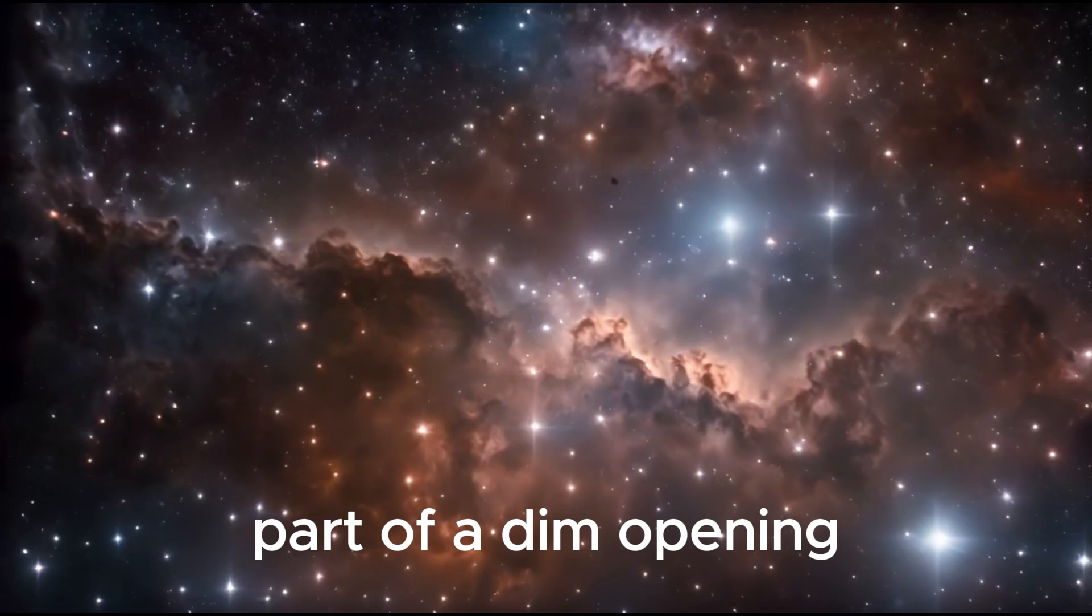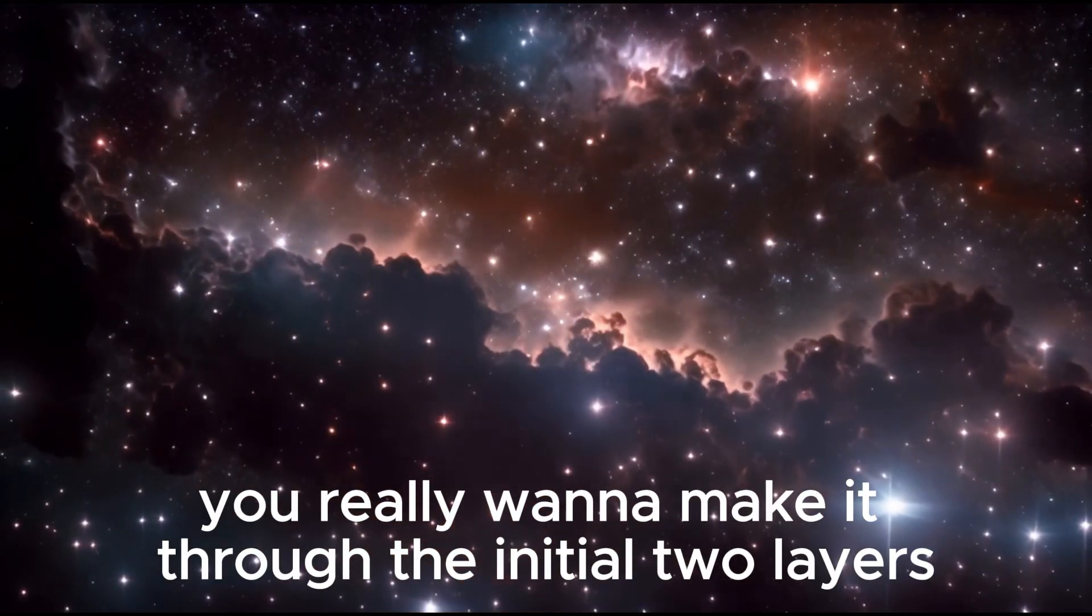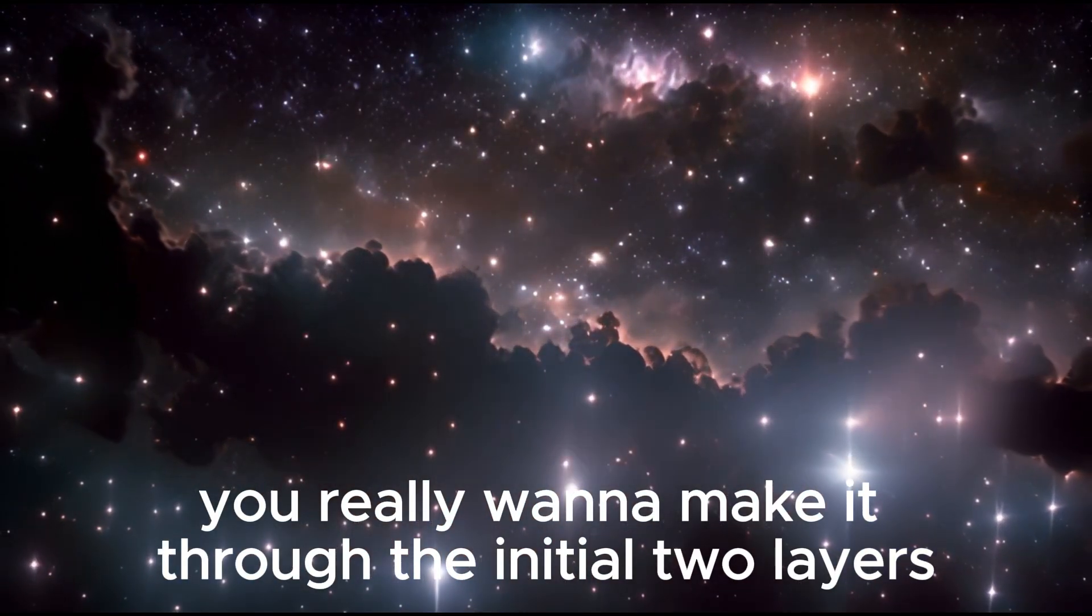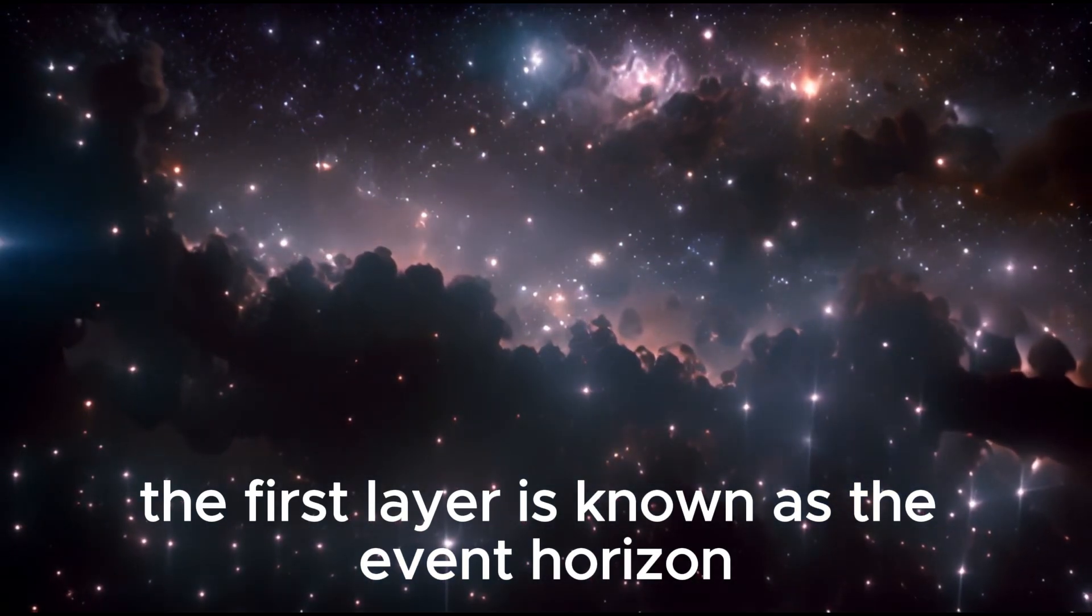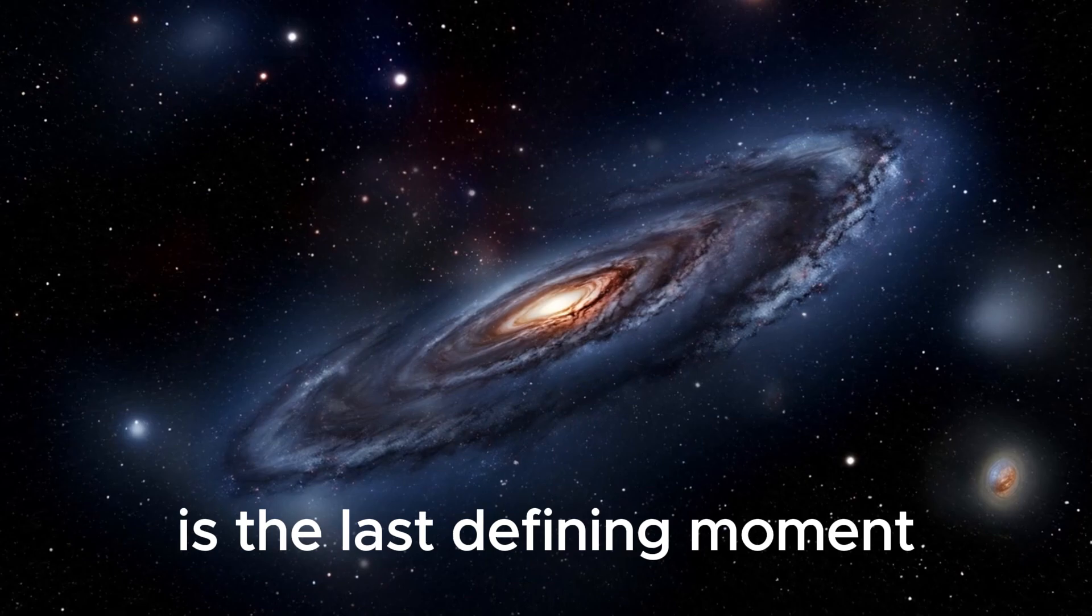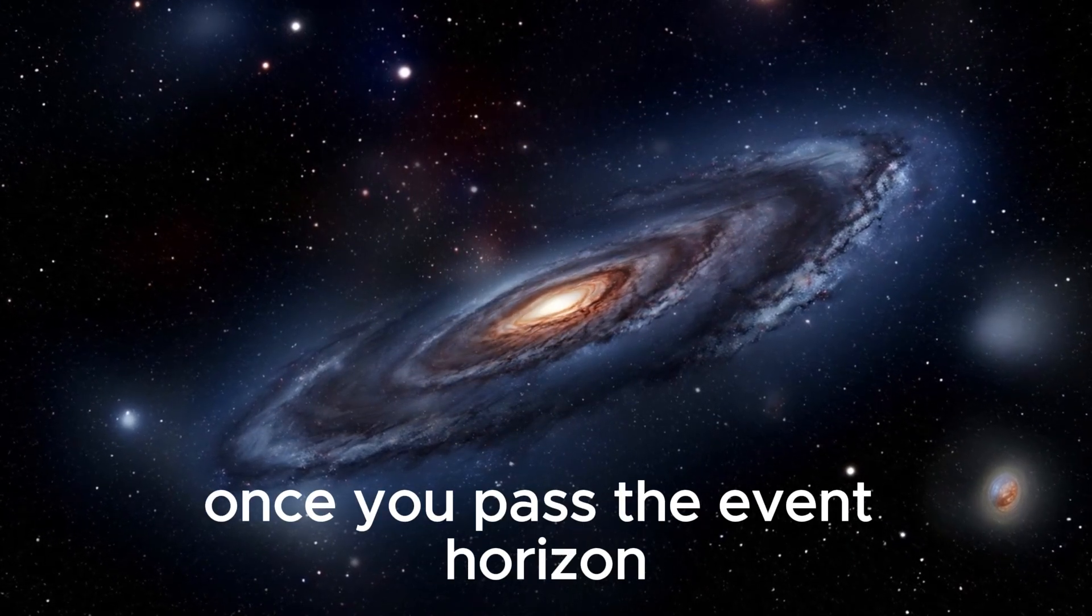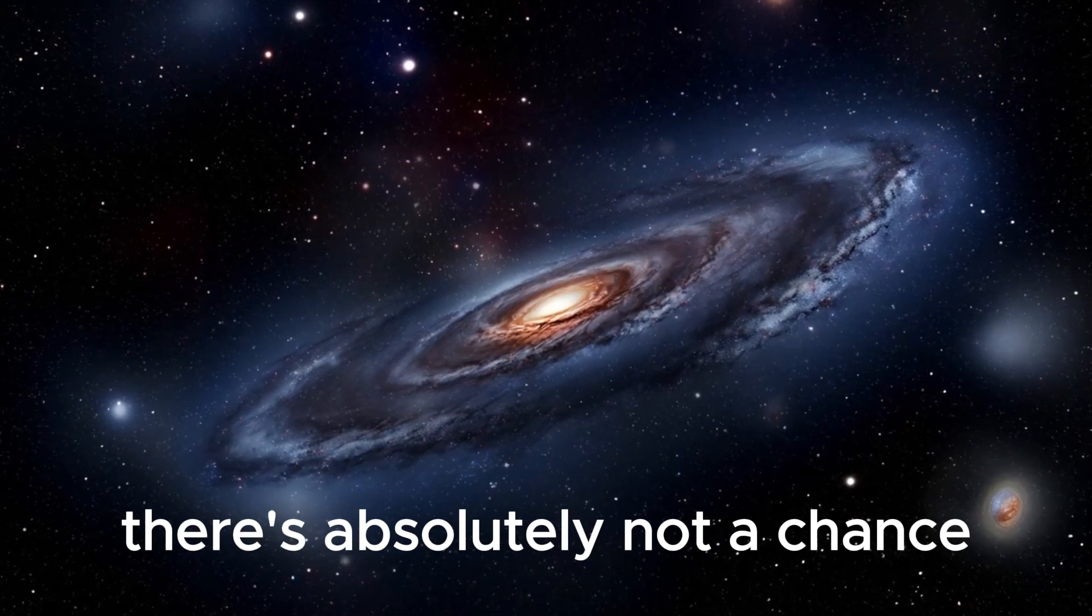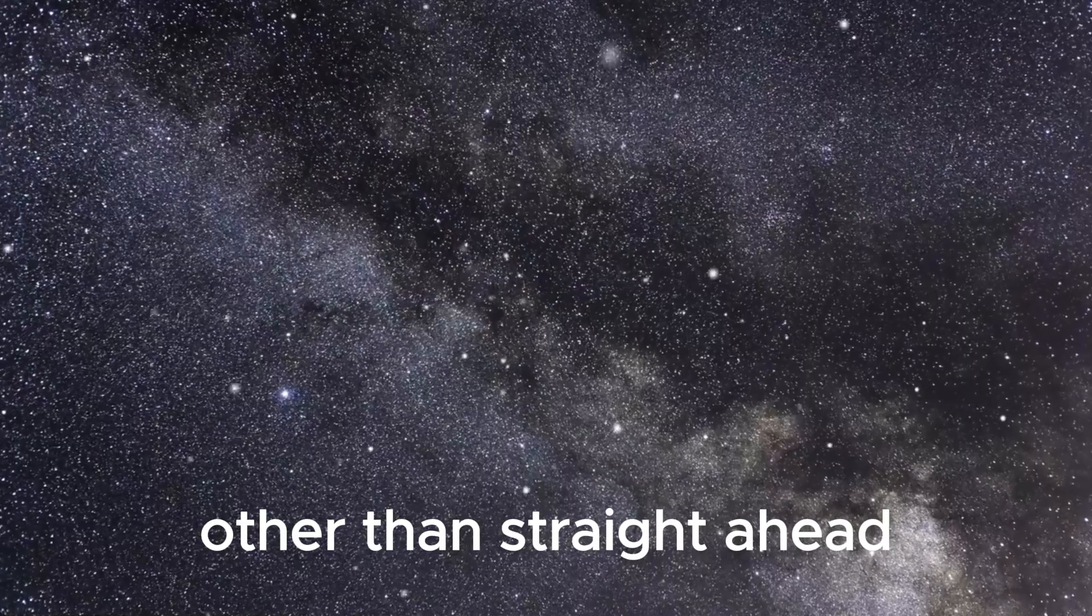To get to the nothingness part of a black hole, you need to make it through the initial two layers. The first layer is known as the event horizon, which, while the main layer, is the last turning point. Once you pass the event horizon, there's absolutely no chance other than straight ahead, and you will be sucked into the black hole.